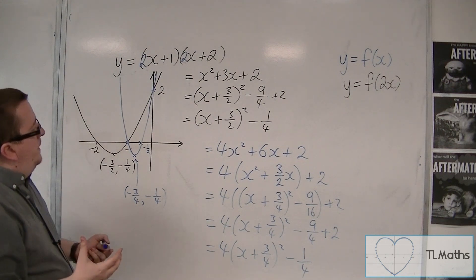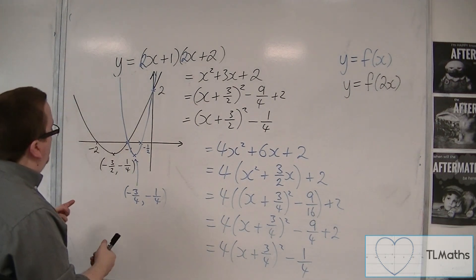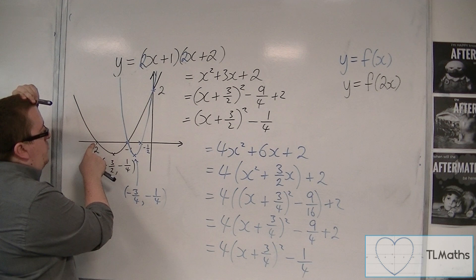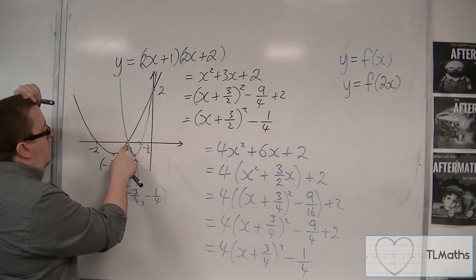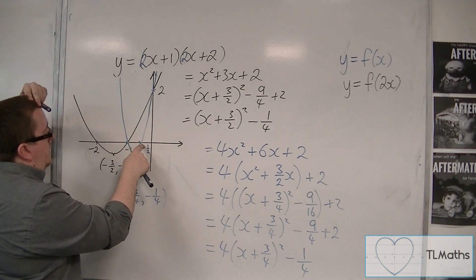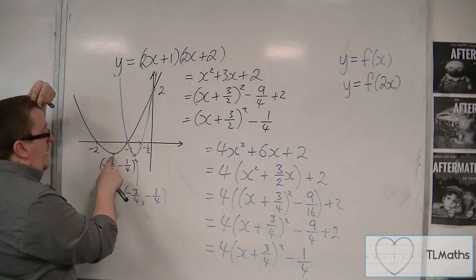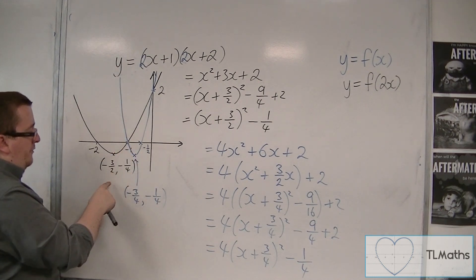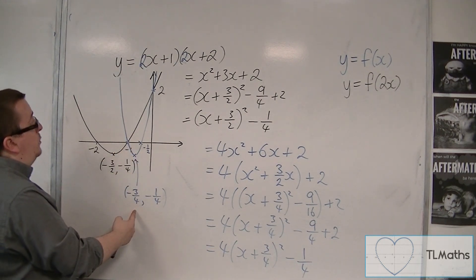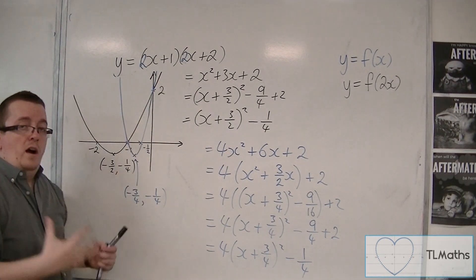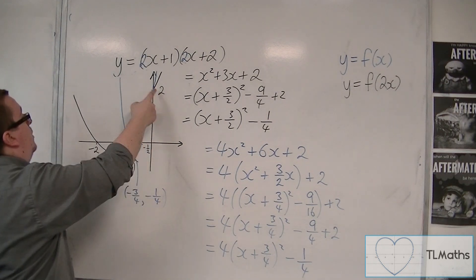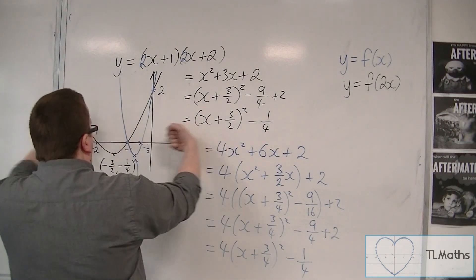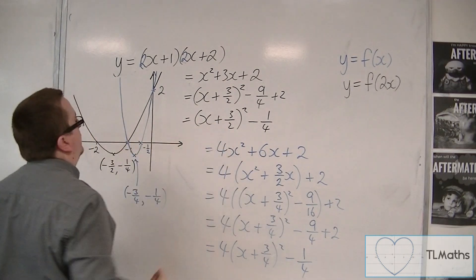So what we can see is that for this parabola, what's happened is that all of the x coordinates—so for this one, minus 2, 0 has become minus 1, 0; minus 1, 0 has become minus 1 half, 0; minus 3 halves, minus 1 quarter has become minus 3 quarters, minus 1 quarter. So in each of the cases, the x coordinate has halved. Half of minus 3 halves is minus 3 quarters. The coordinate up here, 0, 2, half of 0 is still 0, so that coordinate remained fixed. So what's happened is that this curve has squashed inwards towards the y-axis.